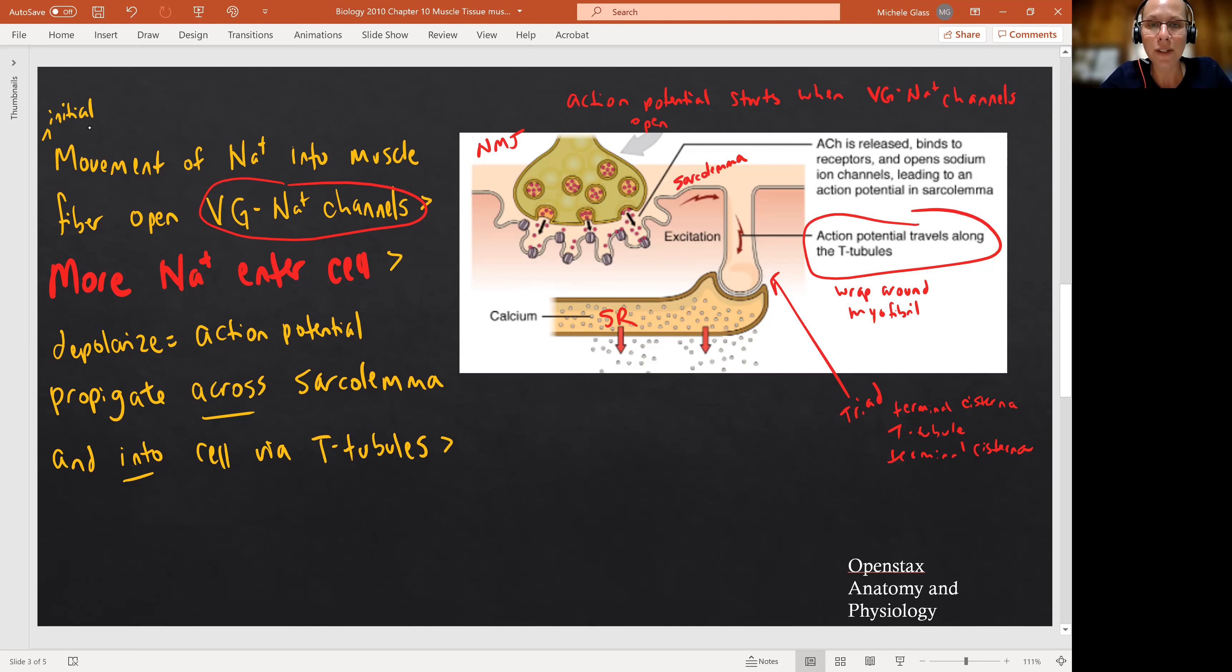And so what we see happening is when the action potential reaches down to the triad, it's going to trigger, it's going to open voltage-gated calcium channels. I'm going to put in parentheses at the SR. Remember, SR is your sarcoplasmic reticulum. So when the action potential reaches the triad, that's opening up voltage-gated calcium channels that are part of the sarcoplasmic reticulum. And calcium ion is going to flood sarcoplasm. Sarcoplasm, remember, is our special name for the cytoplasm in the muscle fiber.